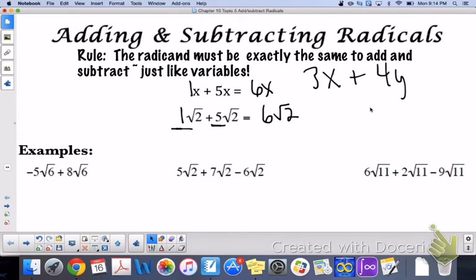Negative five root six plus eight root six - negative five plus eight is three root six. Five root two plus seven root two, well five plus seven is twelve root two, and then minus six root two - twelve minus six is six root two.